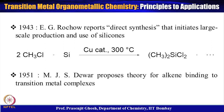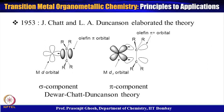In 1951, M.J.S. Dewar proposed the theory of alkene binding to transition metal complexes — a very engaging theory involving interaction of ligand orbitals with metal orbitals. In 1953, J. Chatt and L.A. Duncanson elaborated the theory and developed the Dewar-Chatt-Duncanson theory, which explained how the bonding happened in Zeiss's salt — discovered in 1827, but explained only about a hundred years later.